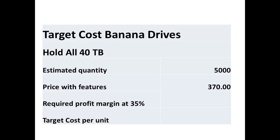Banana Drives is considering introducing a 40TB drive. The estimate of 5,000 sales has been determined, and the price with desired features has to be in the region of $370 to be competitive. With a required profit margin of 35%, then the target cost per unit is $240.50. If this cannot be achieved, then the process can become cyclical, starting with a re-examining of the desired features and perhaps altering the specification slightly.